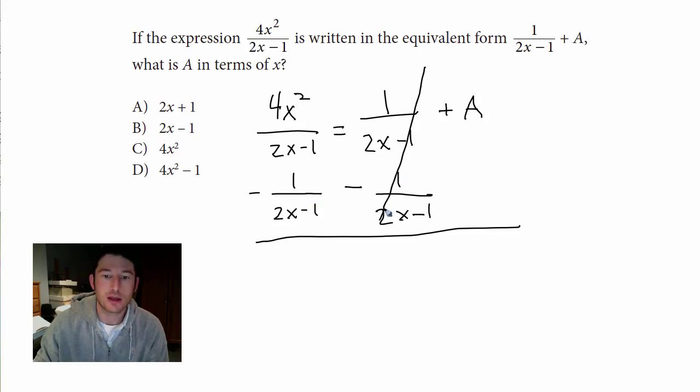So that whole thing crosses out. And I'll rewrite this. 4x squared over 2x minus 1 minus 1 over 2x minus 1 equals A.